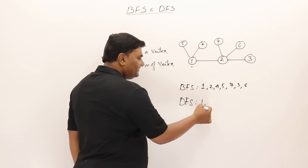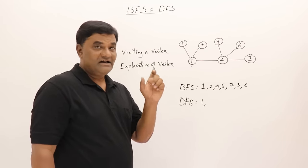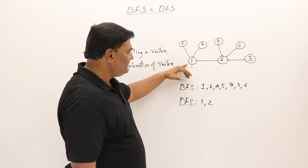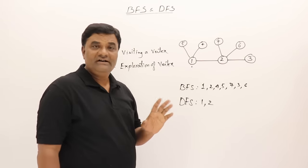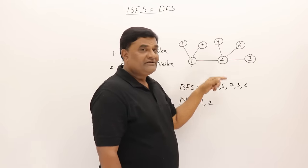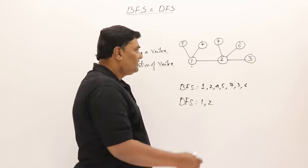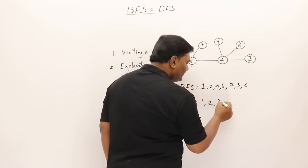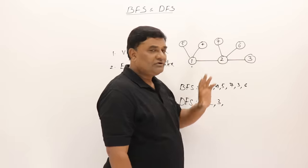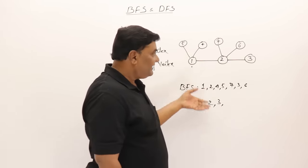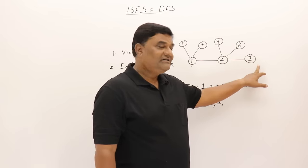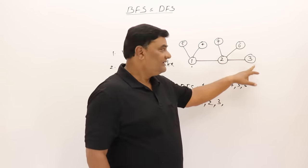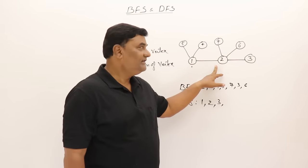Now let's look at depth first search. I'll start from vertex 1, then start its exploration and go to vertex 2. Now, don't visit the other adjacent vertices 4 and 5 yet — you have reached a new vertex, so start exploring that vertex. Adjacent to 2 are 7, 6, and 3. Go to 3. Don't visit 6 and 7 yet — start exploring 3. There is nothing connected to 3, so 3 is completely explored. Come back and continue the exploration of 2, going to 6.